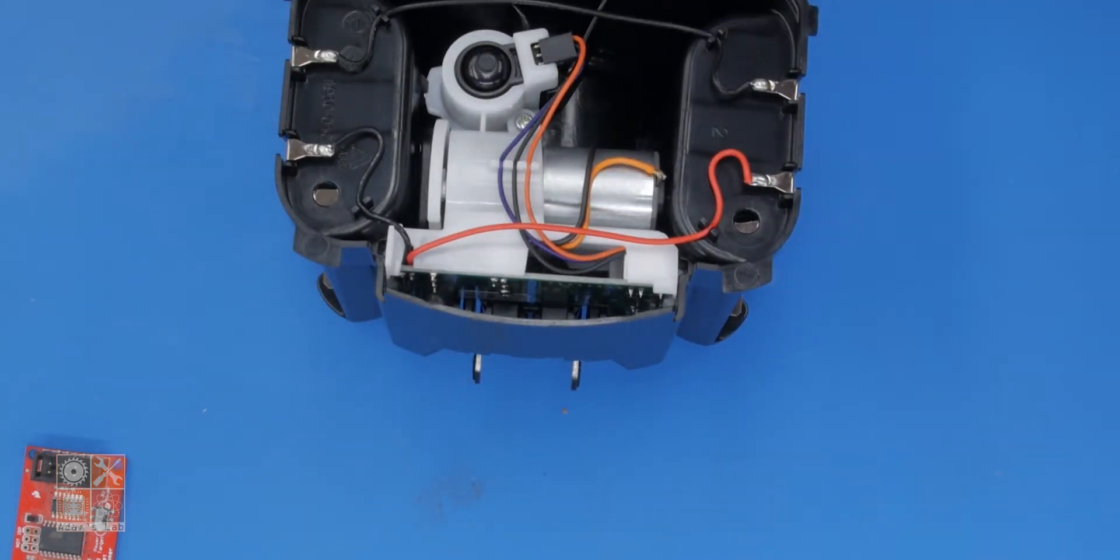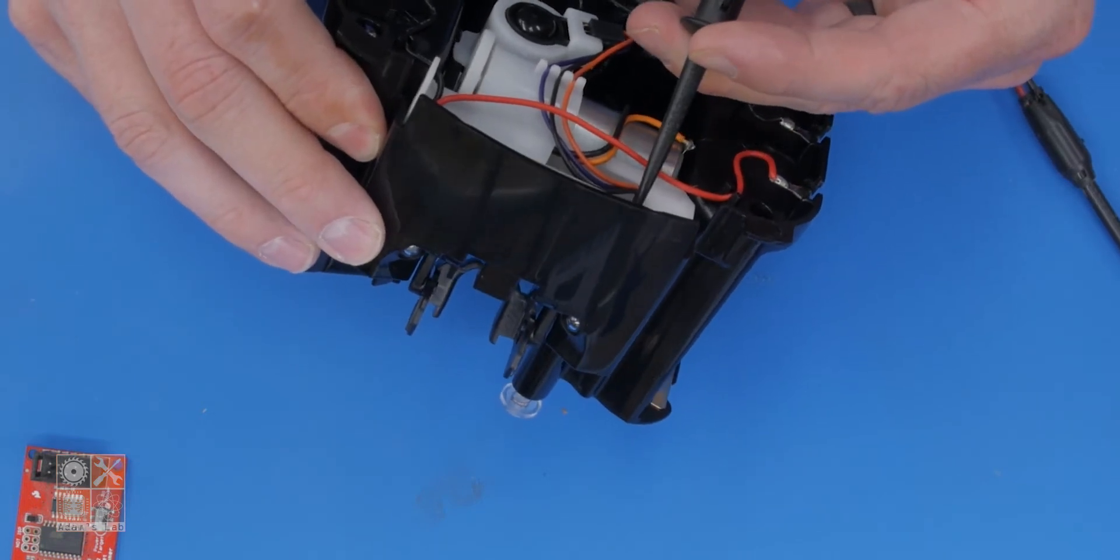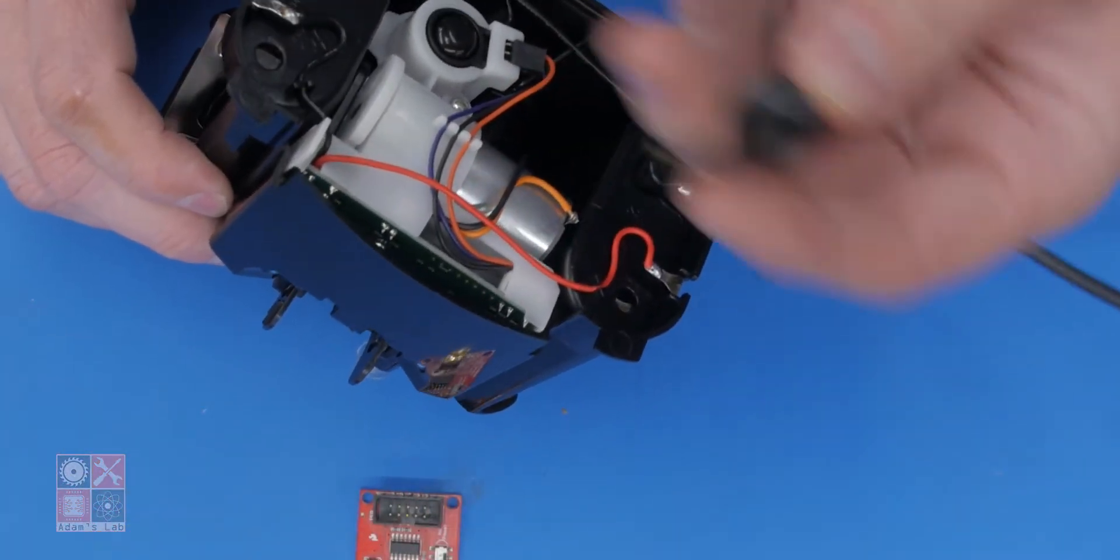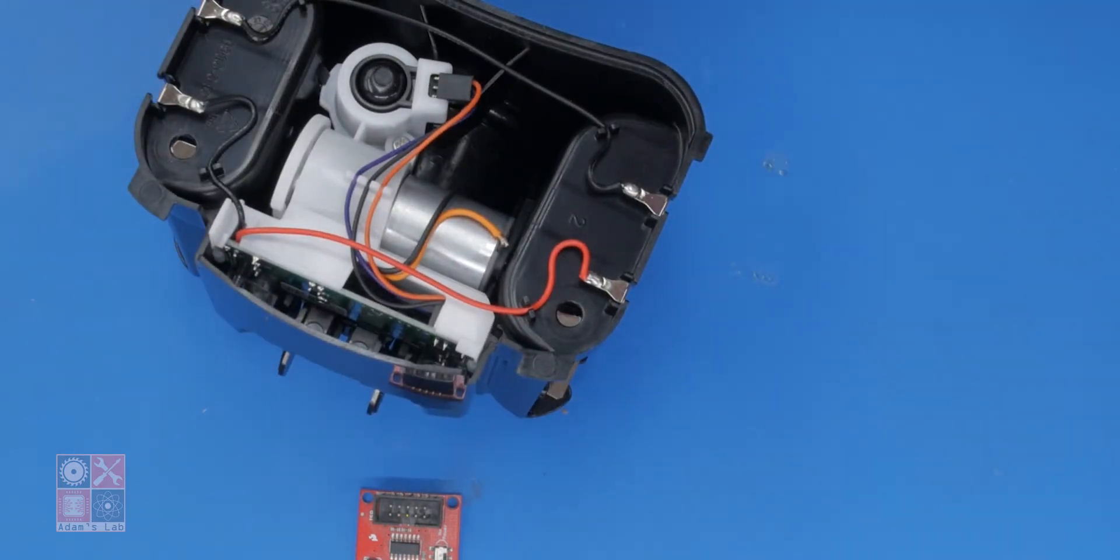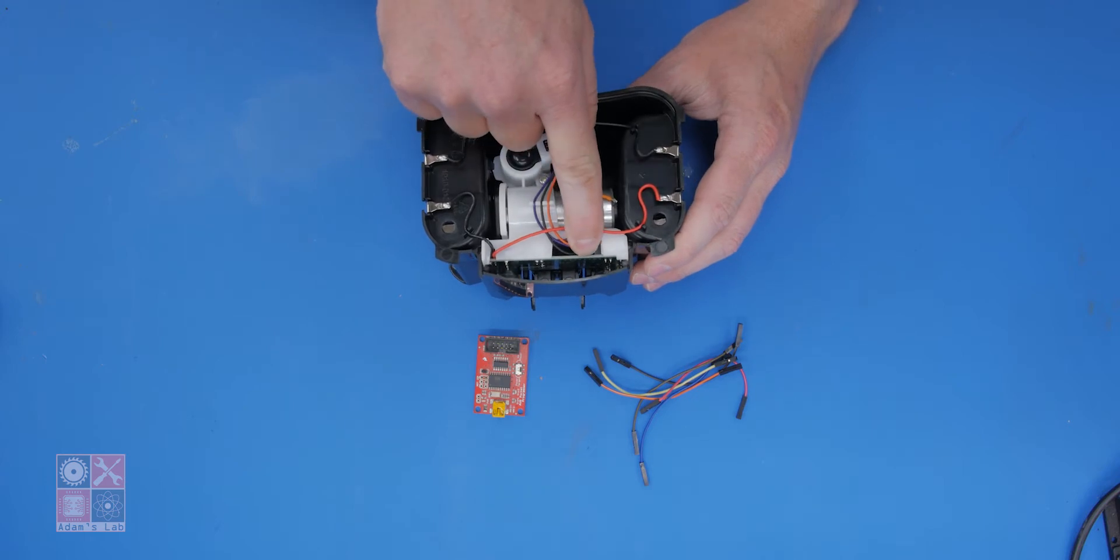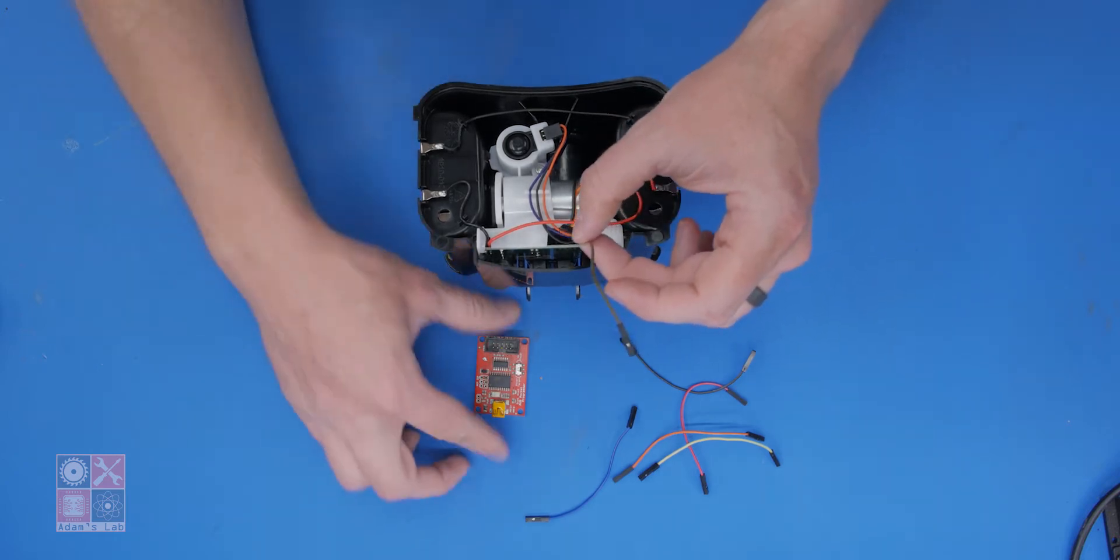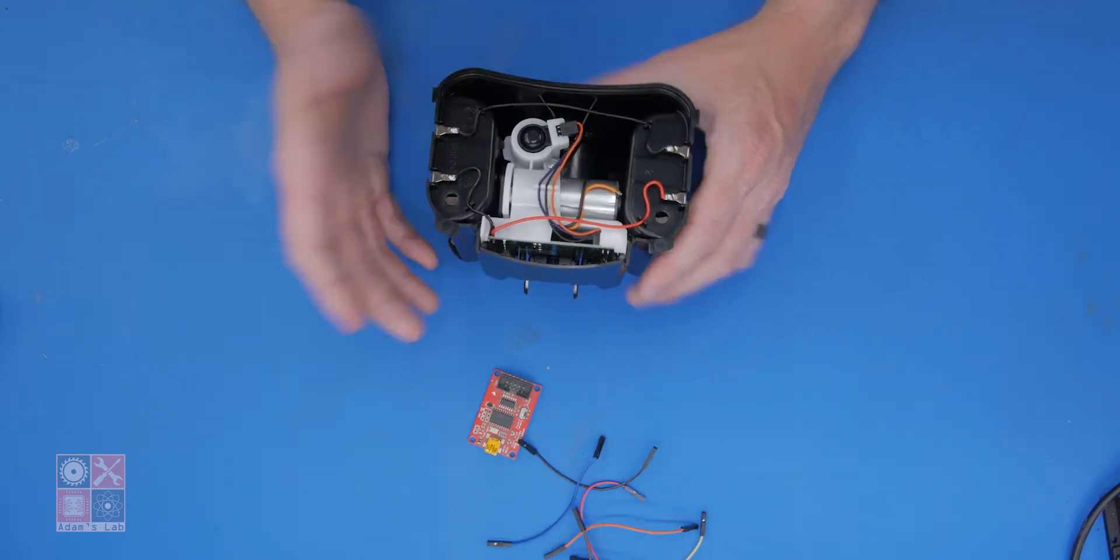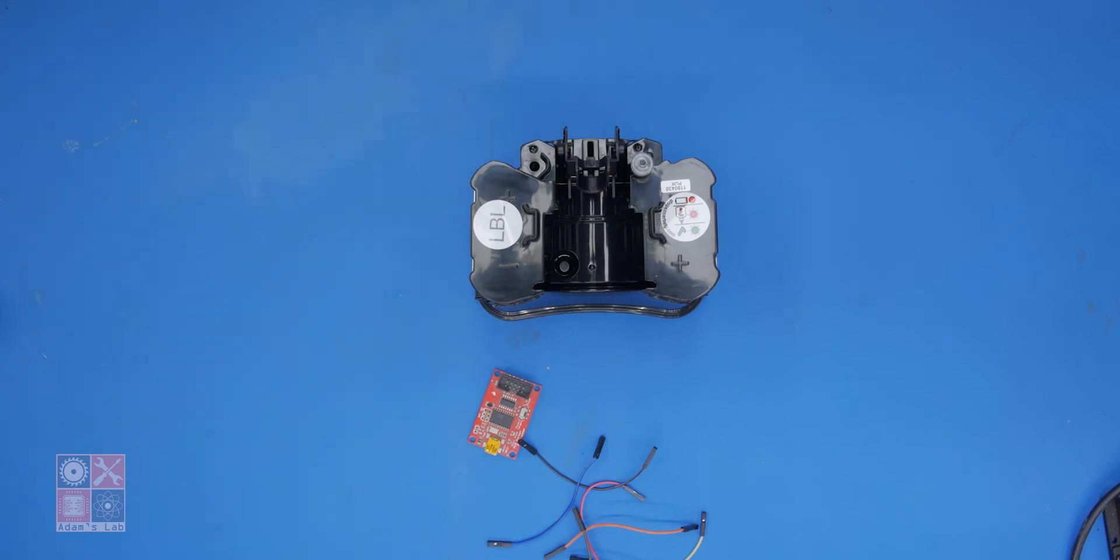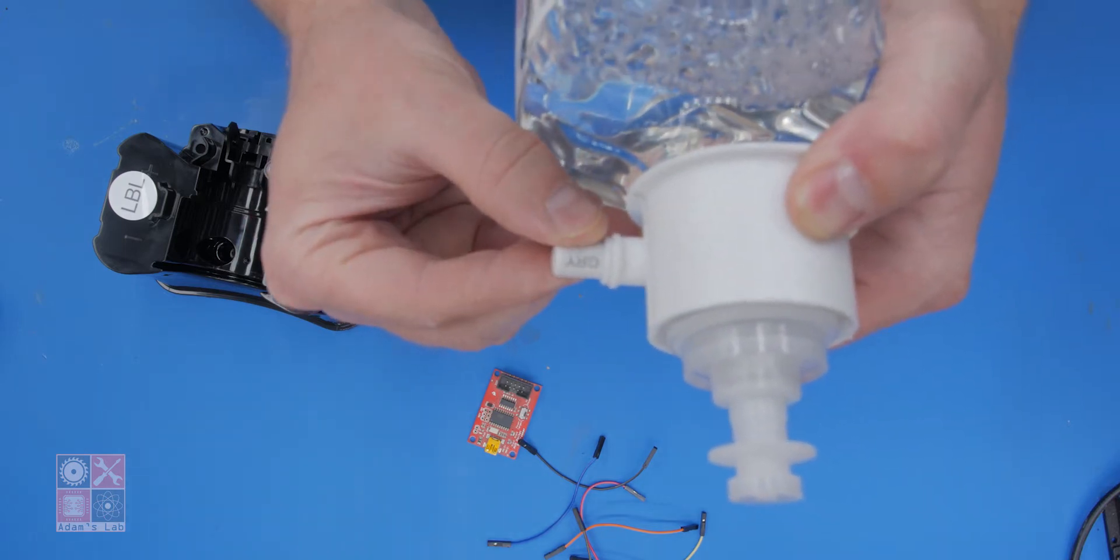The header for programming is right there. If you have hookup wires that have little hooks on them like these guys, you could probably go in there and hook those on and program it that way. I don't have enough of these to do that, so I'm going to dismantle this. It's fairly straightforward. I'll solder on a header onto the board, and that'll give me access to plug in the wires and hook up the programmer.